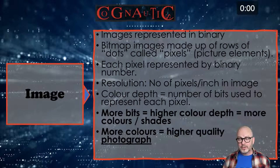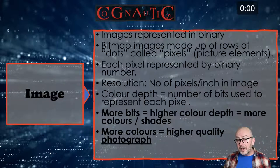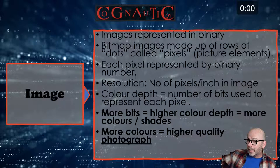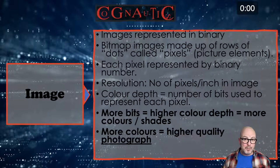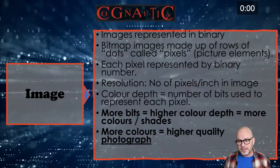Now images - same thing, images represented in binary. Bitmap images are made up of dots called pixels. Each pixel is represented by a binary number. The longer that binary number, the more the range of colors you could possibly use - you could use 256 colors, or millions of colors if you wanted to, but it would make for a larger image file. Resolution is the number of pixels per inch in an image.